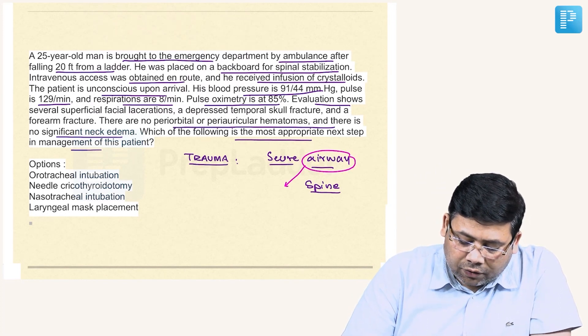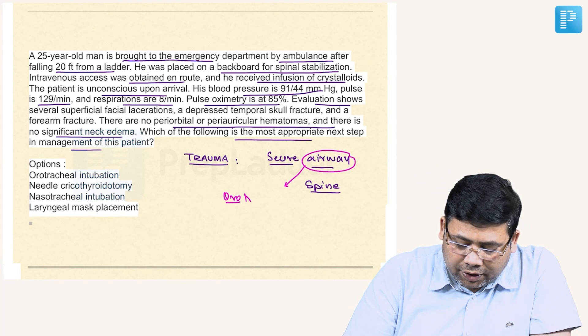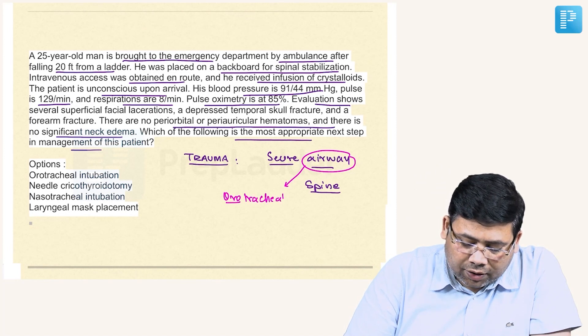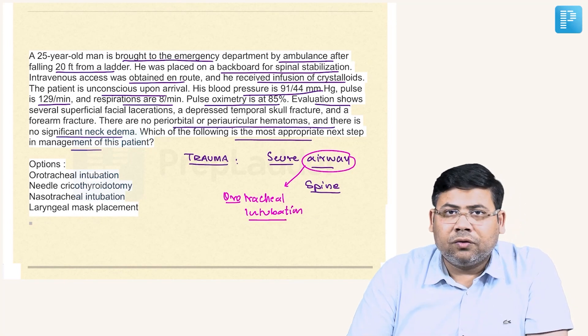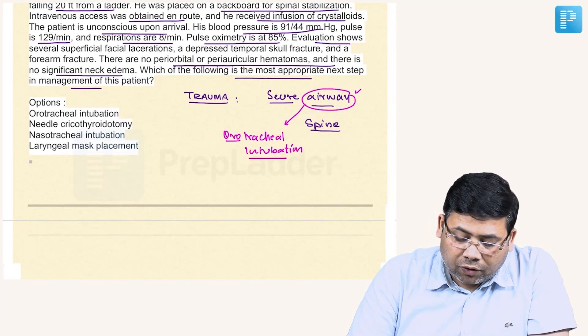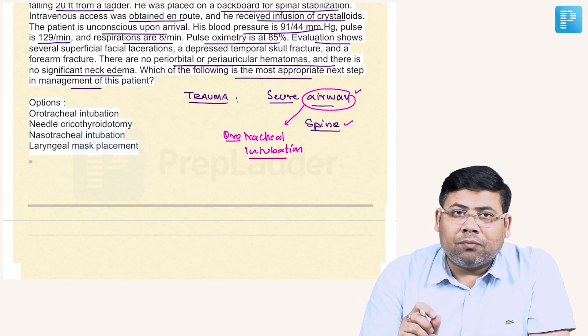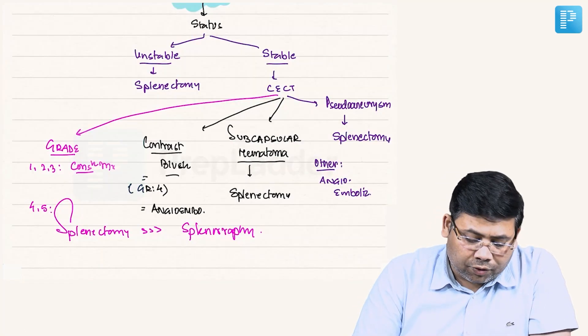For airway you require orotracheal intubation in this case. So orotracheal intubation should be the next step, and after this you will follow anything. We secure airway and spine because this is the most common cause of mortality.